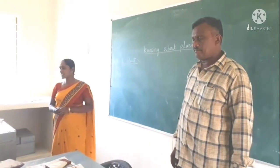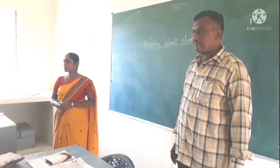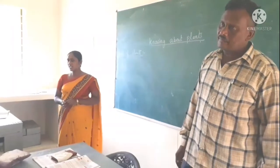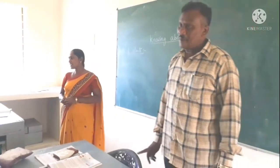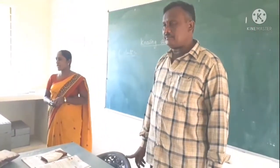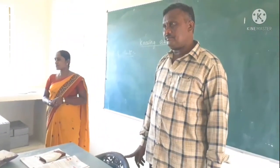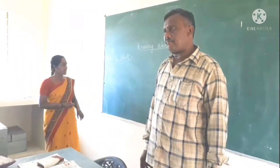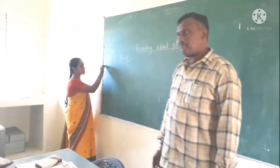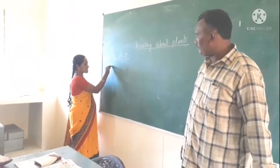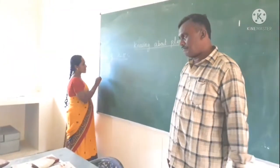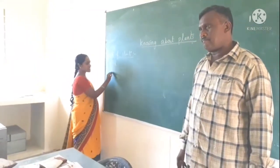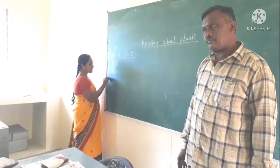Which part is green in color? These are green in color. Do you know any other parts of plants? Yes. Can you name those? Yes. What is the first part? Roots. Roots is the first part. And then? Stem. Stem is the second part.